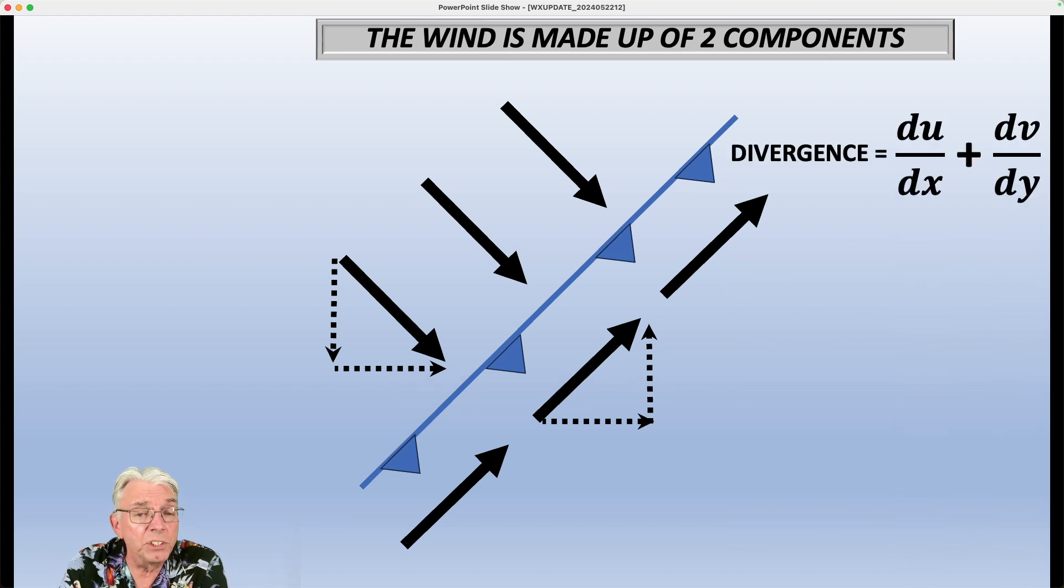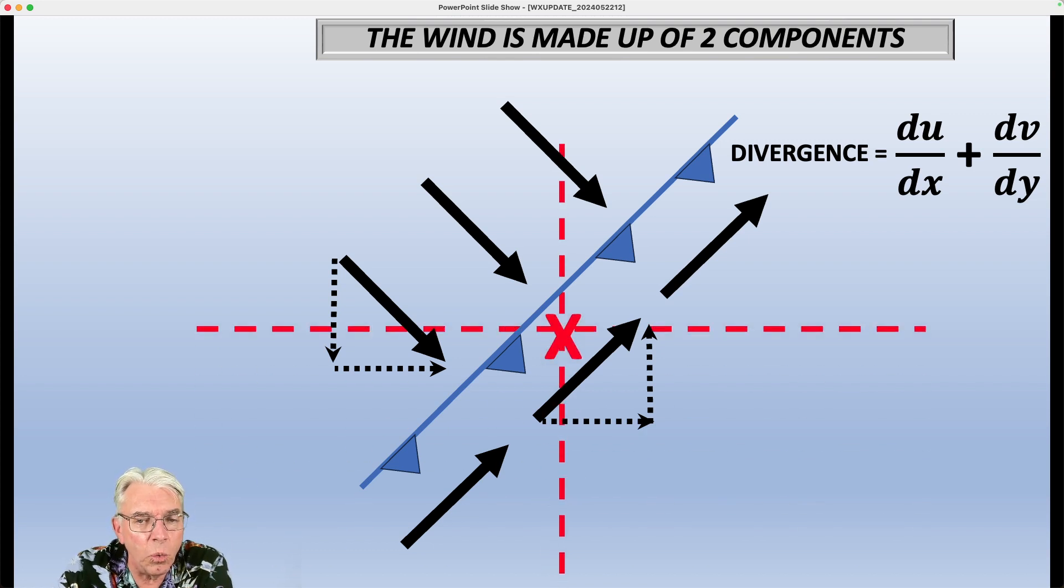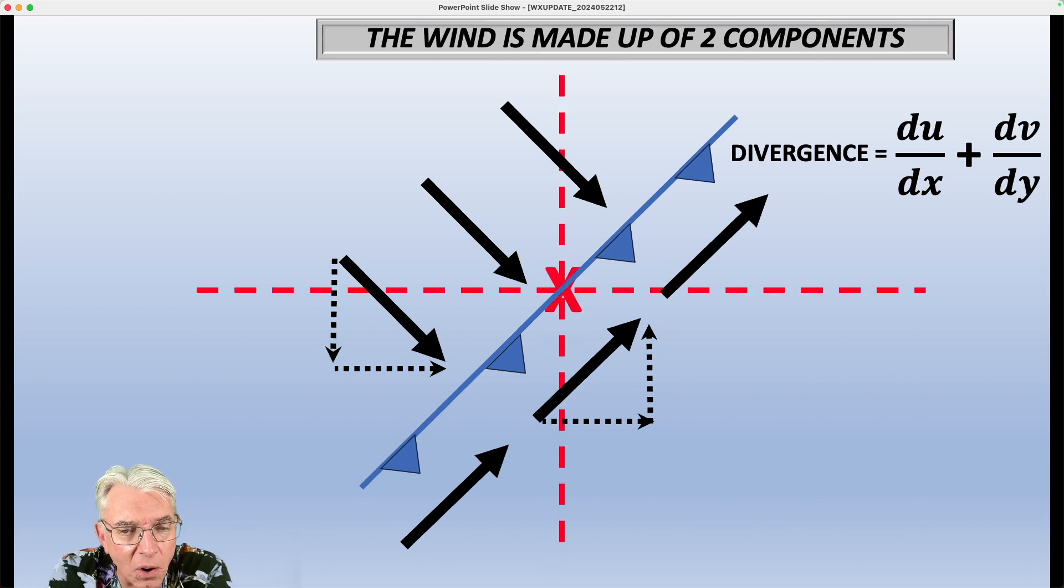So the divergence equation says that we need to look at how the U component of the wind is changing along the x-axis and how the V component of the wind is changing along the y-axis. So let's put a little trusty coordinate system in here. We're going to put our x right on the front. And this is the x-axis here, like that. And the y-axis is up and down.